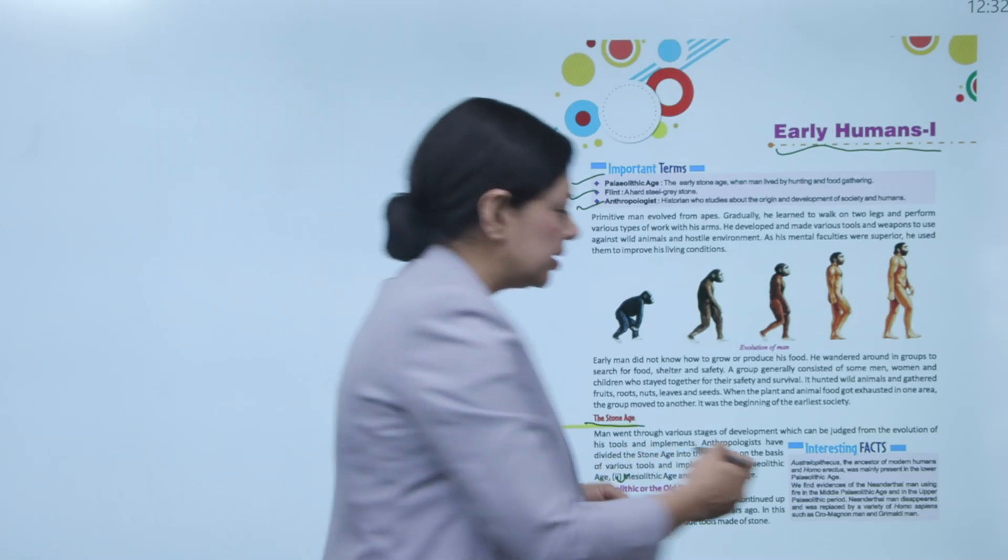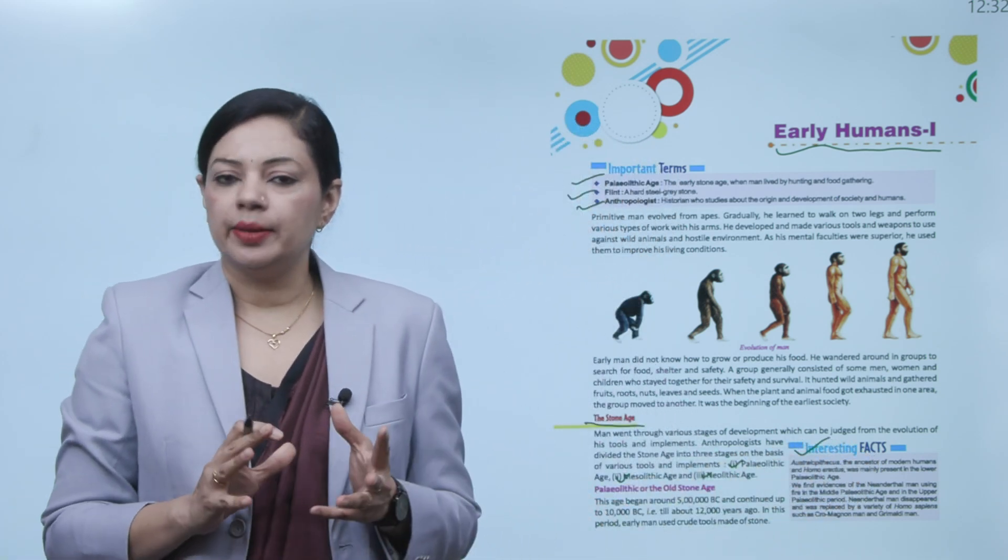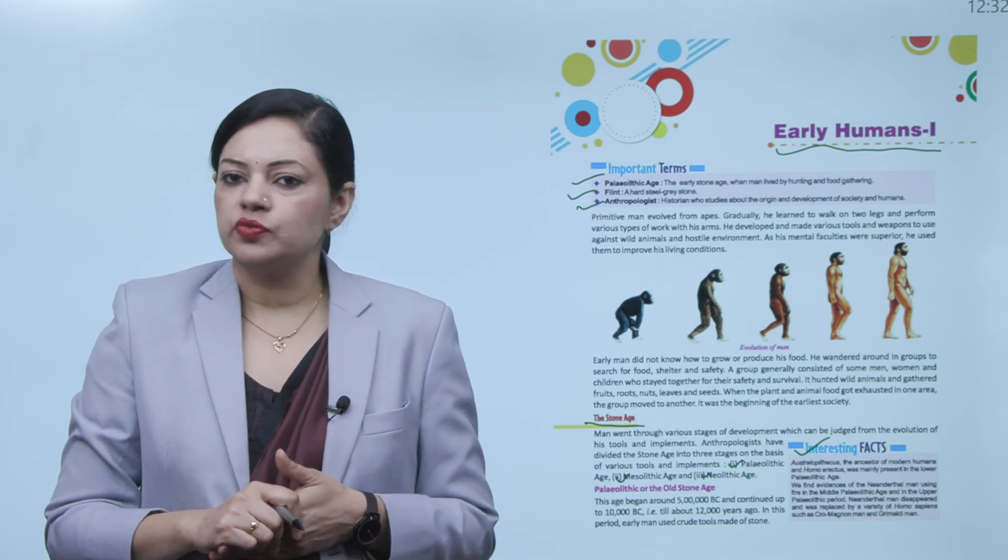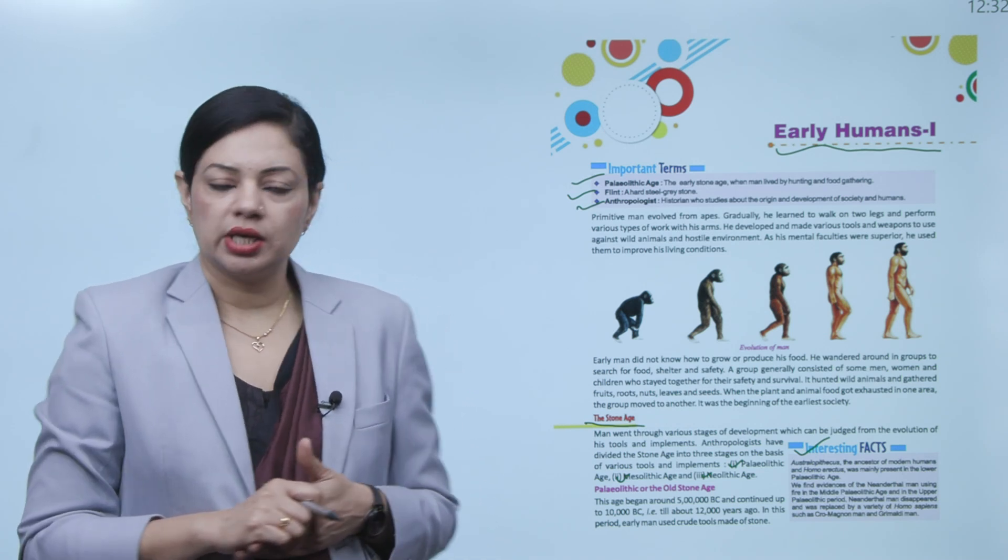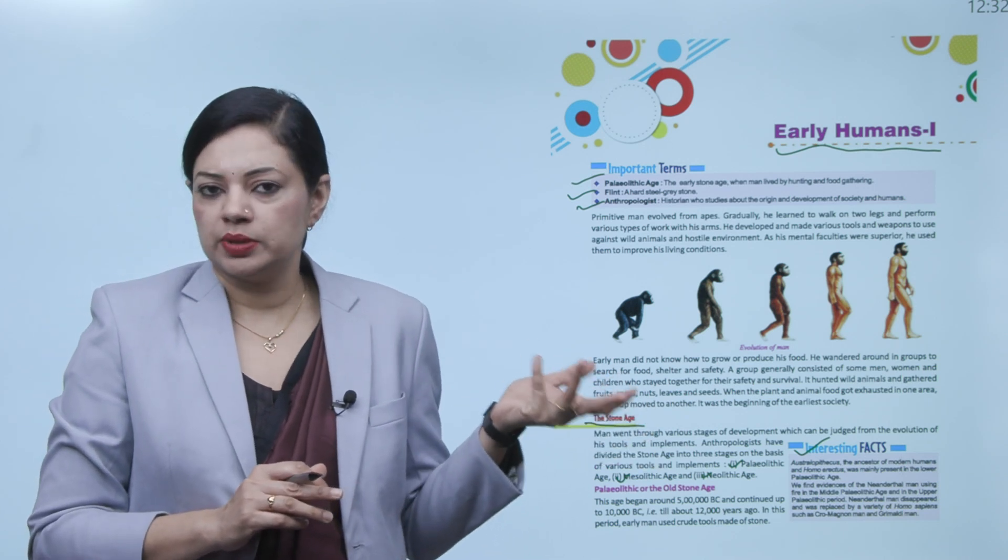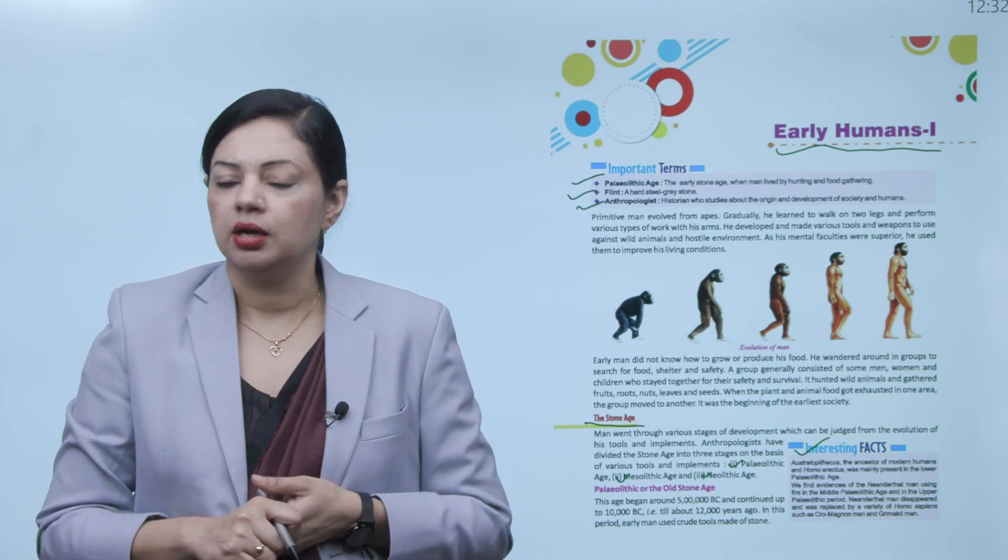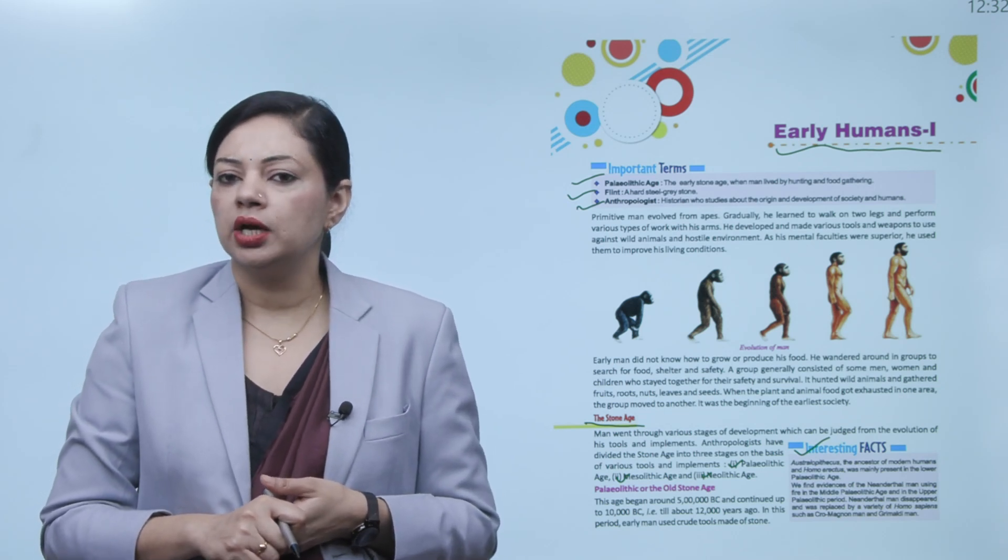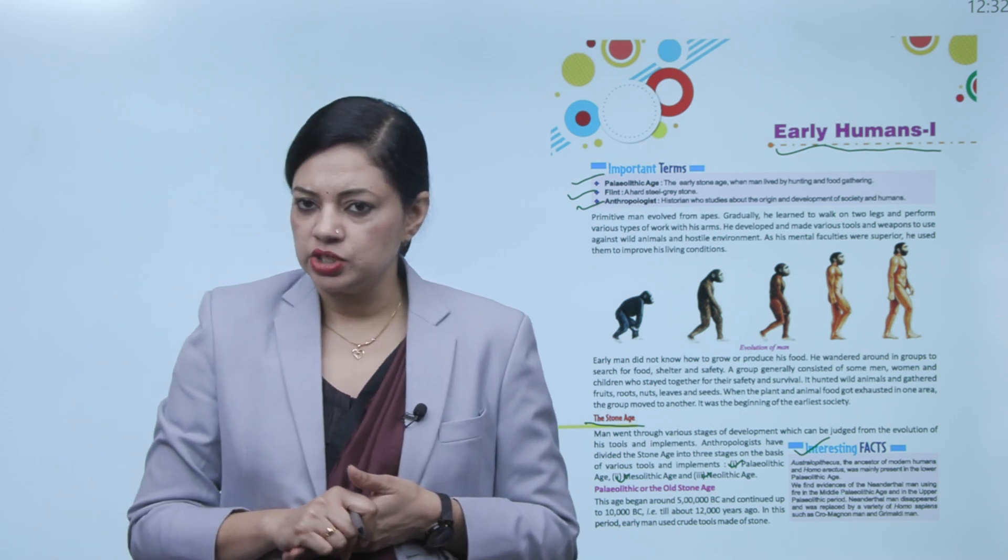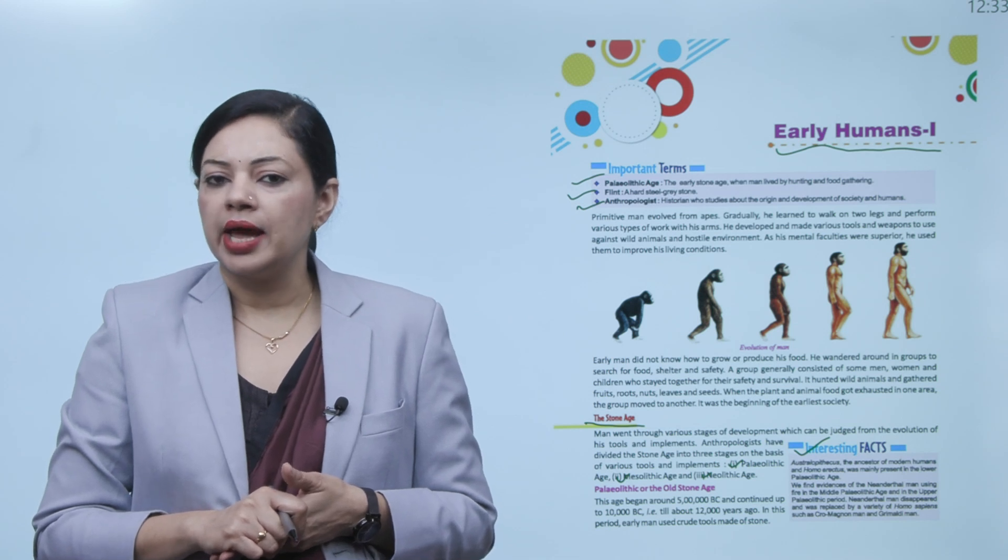First is Paleolithic, second is Mesolithic, and third is Neolithic. Before starting the Paleolithic age, we have to read an interesting fact: Australopithecus, the ape ancestor of modern humans and Homo erectus, was mainly present in the lower Paleolithic age. The Paleolithic age we're going to read about, even before that oldest Stone Age period, there was this ape-type structure of human beings.